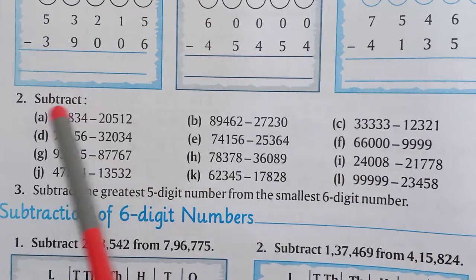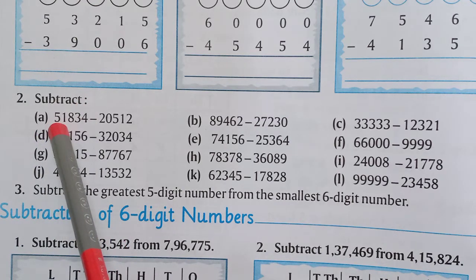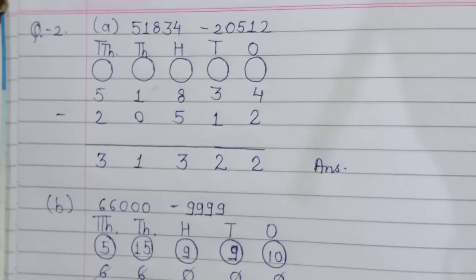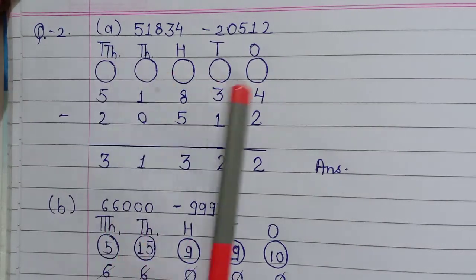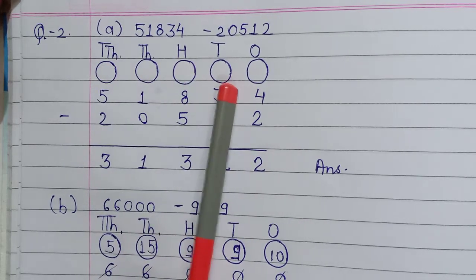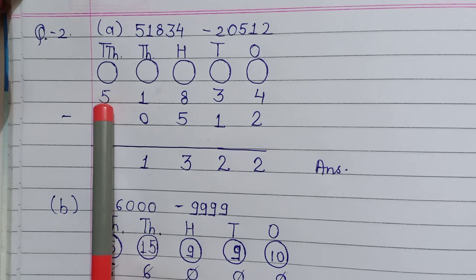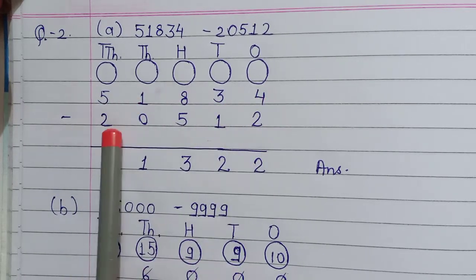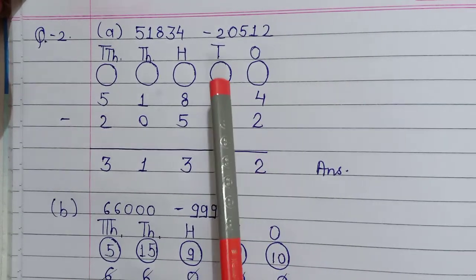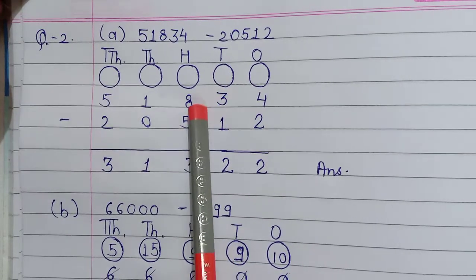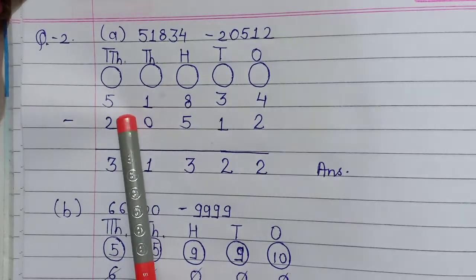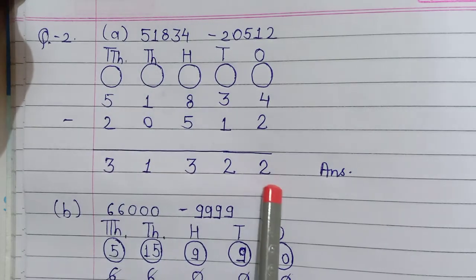Now question number 2 — subtract. First, write the places: ones, hundreds, thousands, and ten thousands. The circles are for carry. Now write the question: 51,834 minus 20,512. Subtract both numbers: 4 minus 2 equals 2, 3 minus 1 equals 2, 8 minus 5 equals 3, 1 minus 0 equals 1, and 5 minus 2 equals 3. The answer is 31,322.